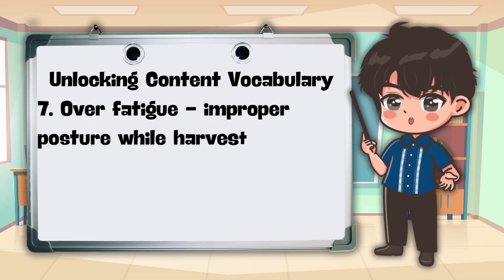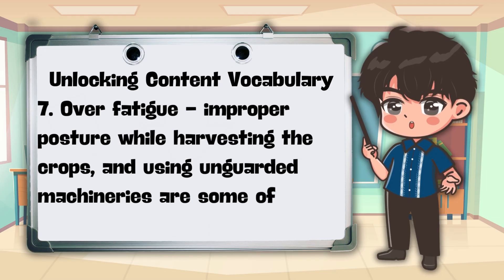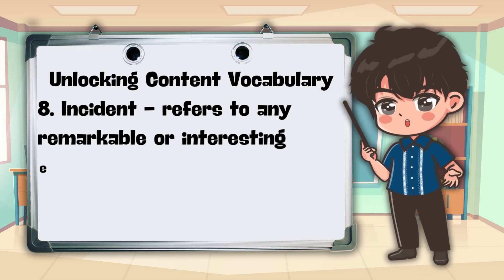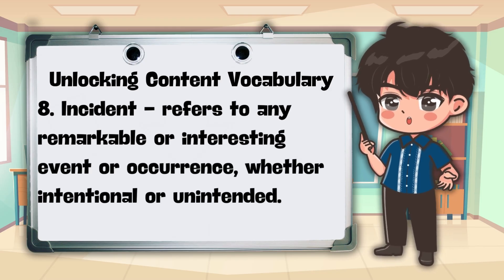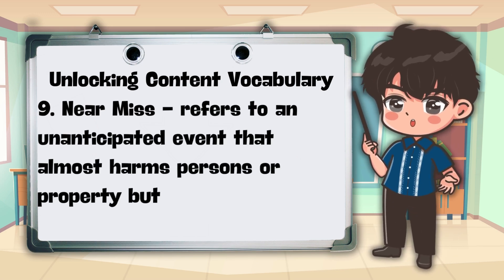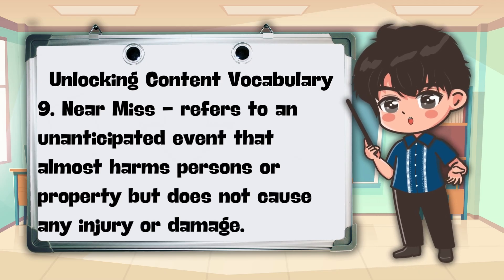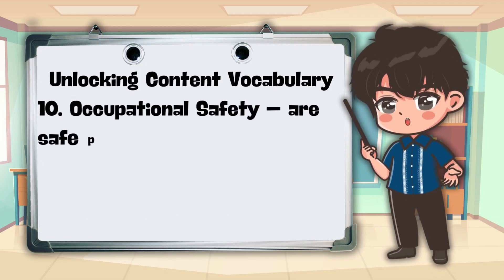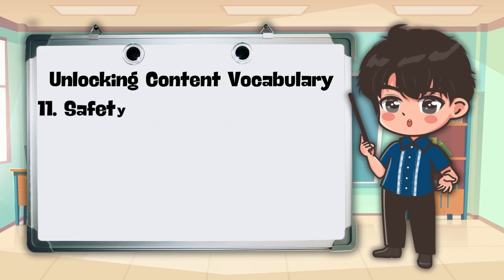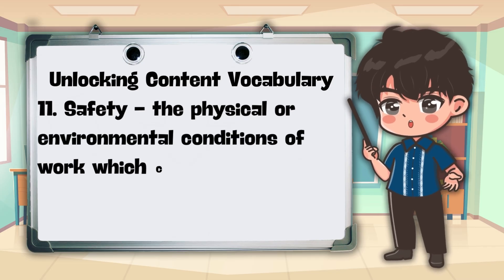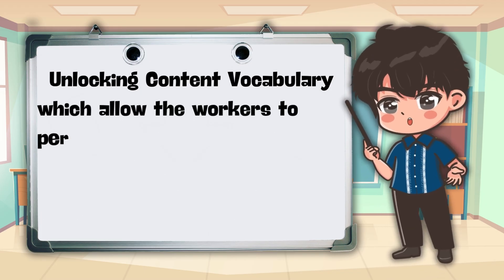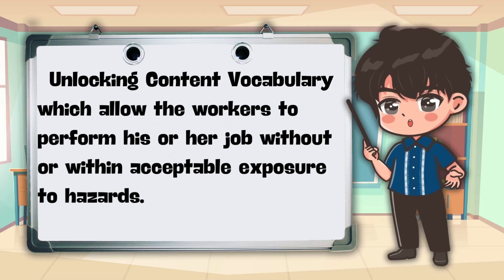7. Over-fatigue — Improper posture while harvesting the crops and using unguarded machineries are some of the common hazards. 8. Incident — It refers to any remarkable or interesting event or occurrence, whether intentional or unintended. 9. Near-miss — It refers to an unanticipated event that almost harms persons or property but does not cause any injury or damage. 10. Occupational Safety — These are safe practices related to production and work process in the workplace. 11. Safety — It is the physical or environmental conditions of work which comply with the prescribed Occupational Health Safety (OHS) standards, and which allow the workers to perform their job without or within acceptable exposure to hazards.